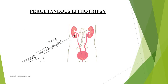In percutaneous lithotripsy, a probe is guided under X-ray fluoroscopy through a small incision into the location of kidney stones. The probe is inserted to locate where the kidney stone is, and then mechanical shockwaves are provided at the tip of the probe.